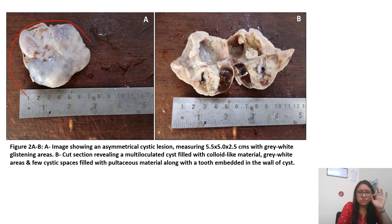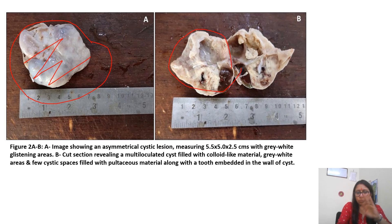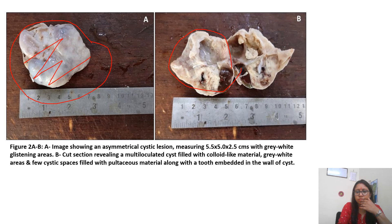This was the external surface — smooth, glistening, gray-white. This is the cut section, opened like a book. What you are seeing here includes some cystic areas, solid areas, gray-white areas, focal solid areas, and this is the tooth which was seen on serial sectioning.